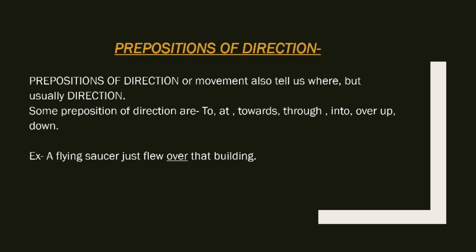Now, prepositions of direction — from the name itself, you can understand these tell us the direction or movement of something. Some examples are: to, at, towards, through, into, over, up, down. For example, 'A flying saucer just flew over that building.' Here 'over' is telling us the direction in which the saucer is going, not just the place.